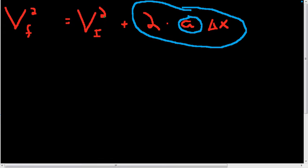Let's clear everything else from that side of the equation. In this case, we have this vi squared we need to get rid of. It's a positive number, it's being added to this other stuff, so to get rid of it, we have to subtract it away — the whole vi squared. Whatever we do to one side, we have to do to the other.